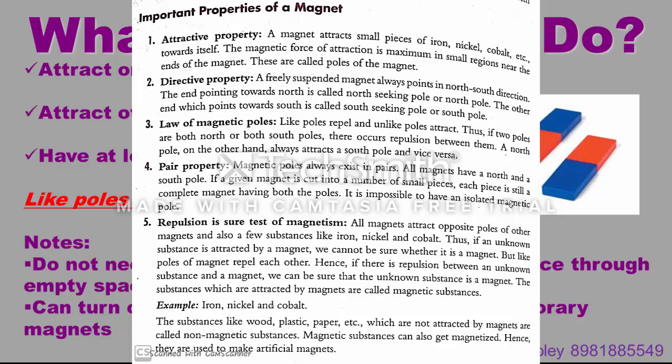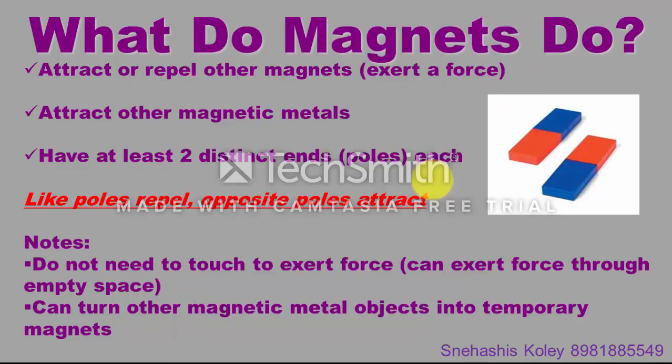Repulsion is the sure test of magnetism. All magnets attract opposite poles of other magnets and also attract magnetic materials like iron, nickel and cobalt. Thus, if an unknown substance is attracted by a magnet, we cannot be sure whether it is a magnet or just a magnetic material. But since like poles repel each other, if there is repulsion between an unknown substance and a magnet, we can be sure that the unknown substance is itself a magnet.